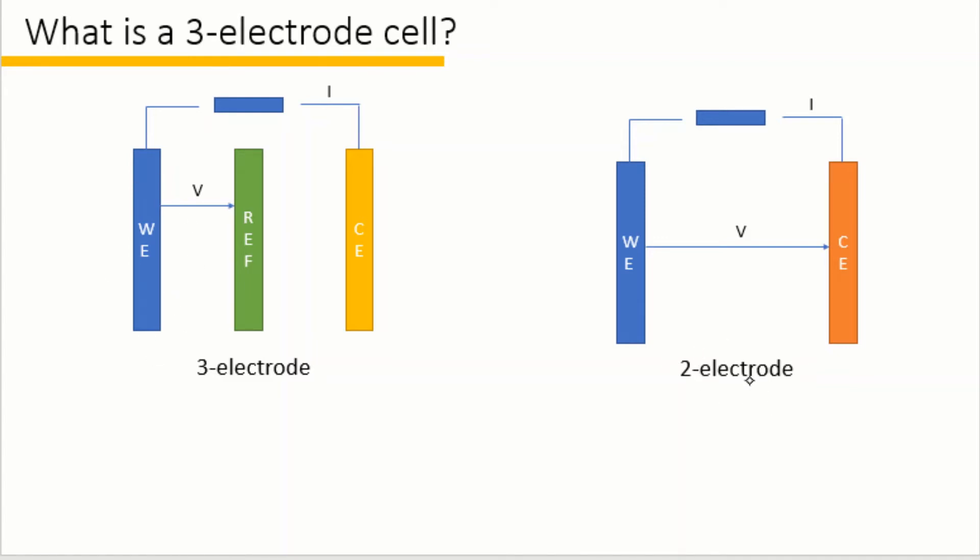For a two-electrode cell, we don't have a reference electrode. In the two-electrode cell, we cannot monitor the potential and the current change of a single electrode, because the potential of both the working electrode and the counter electrode is changing during cycling.